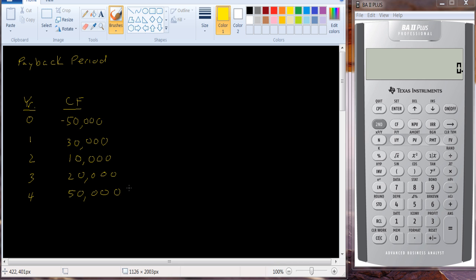So if you look, after one year, we've recouped $30,000 out of the $50,000. You could do it this way. You could take $50,000 and subtract the $30,000. So now we're down to $20,000.